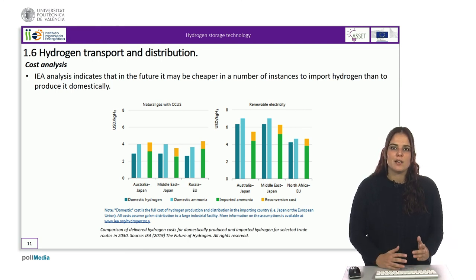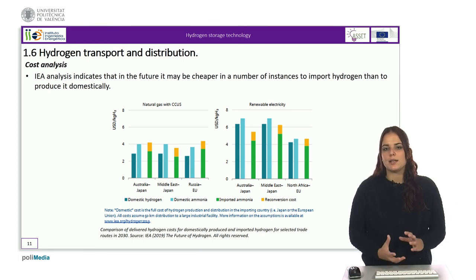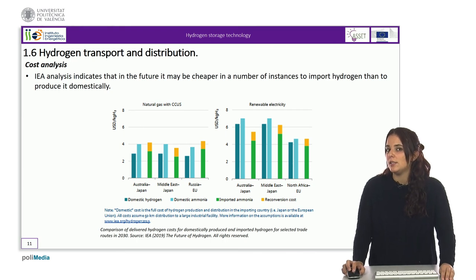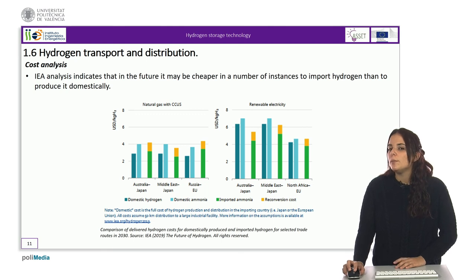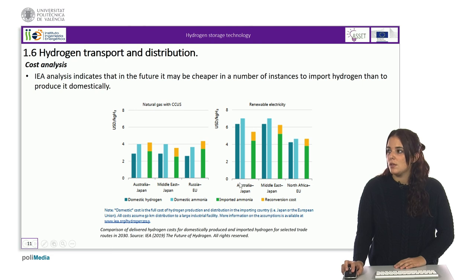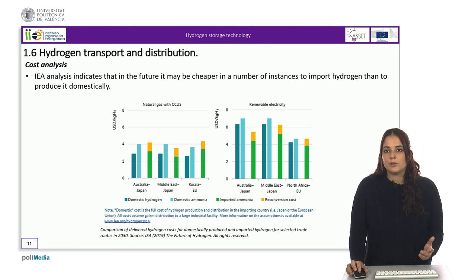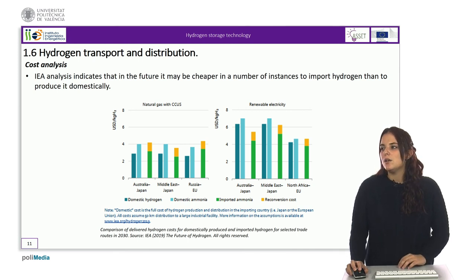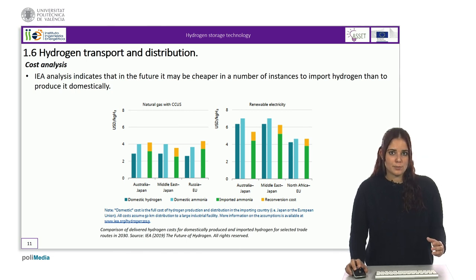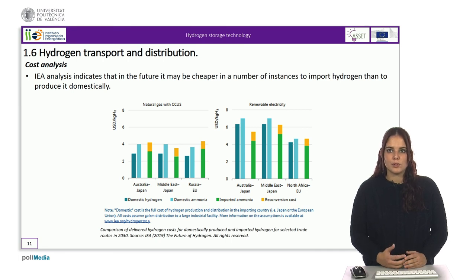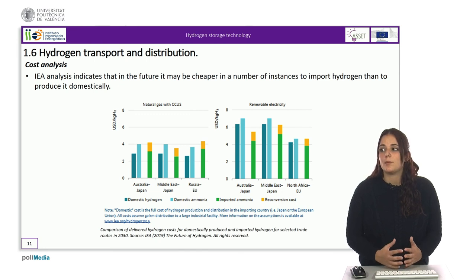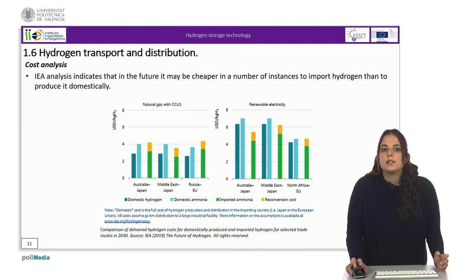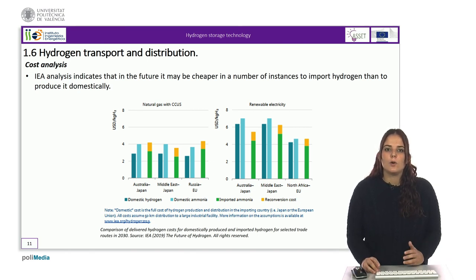Hydrogen imports could be cheaper than domestic production for a number of countries, especially if ammonia can be used by the final customer without the need for reconversion back into hydrogen. For example, the cost of importing ammonia from electrolytic hydrogen produced in North Africa into Europe could be cheaper than producing it in Europe. However, for many other possible trade routes, the relatively high cost of hydrogen transmission and distribution means that it will generally be cheaper to produce hydrogen domestically rather than import it, because the cost of transport will outweigh differences in the cost of electricity production from renewable sources or differences in natural gas prices and the cost of carbon capture, utilization, and storage.